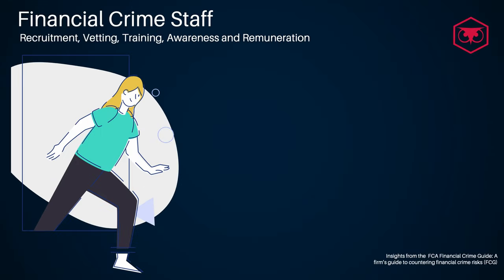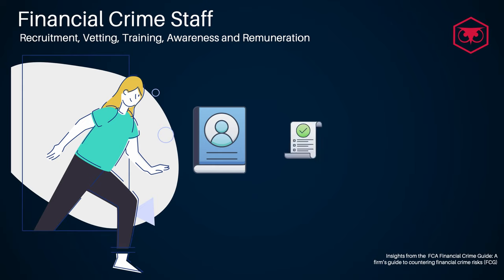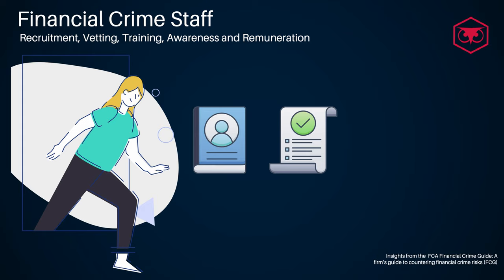Staff recruitment, vetting, training, awareness, and remuneration. Regulated firms must employ professionals with the right level of skills and knowledge to effectively manage financial crime risks. An ongoing review process should be in place to ensure competencies remain up to date, as well as relevant financial crime related training programs. The remuneration assigned for financial crime roles should take into account and mitigate the risk of staff being rewarded for taking inappropriate financial crime risks, as required by the Remuneration Principle 12H of the FCA Handbook.